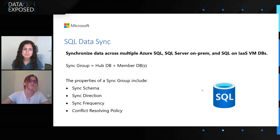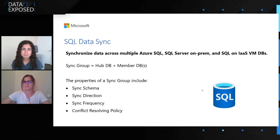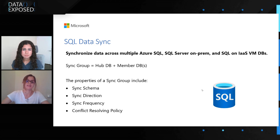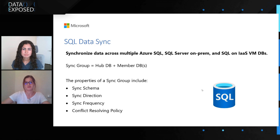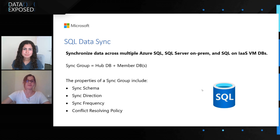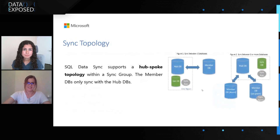And lastly, there's also a conflict-resolving policy. When you set up a Sync Group, you have to tell SQL Data Sync what you want to happen if you have some conflicts when changes are being made — whether you want the hub to win, so the changes in hub override those on the member, or you want the member to win. You have to select one of these two options when you create a Sync Group. That's a brief intro to how SQL Data Sync works.